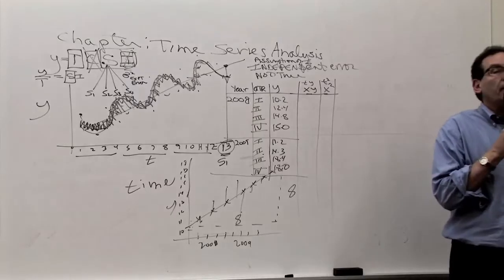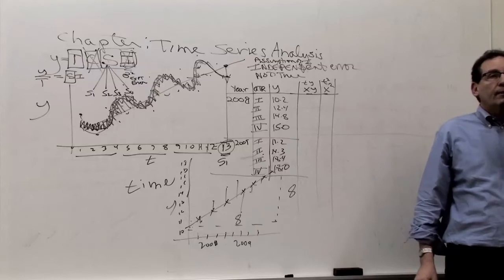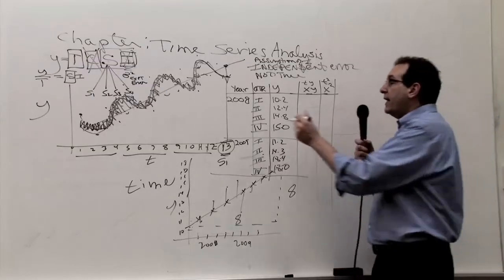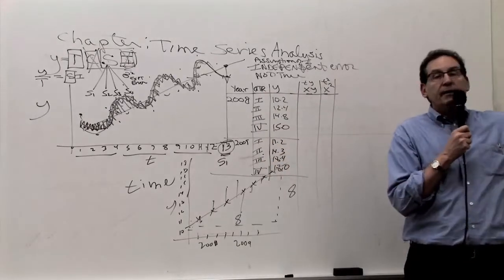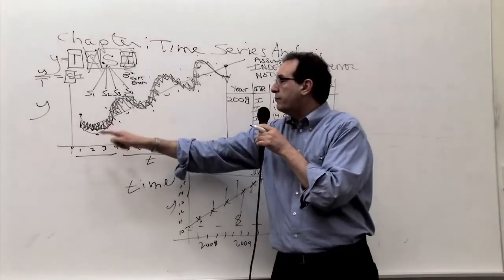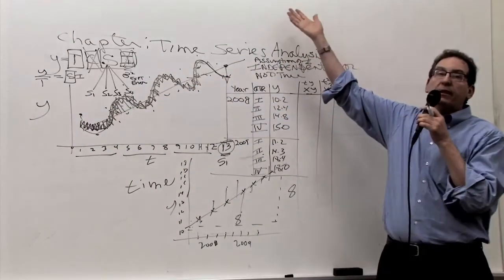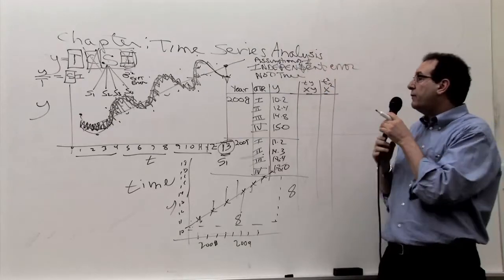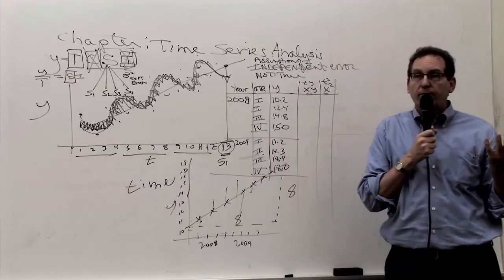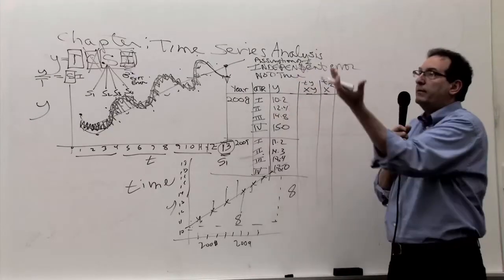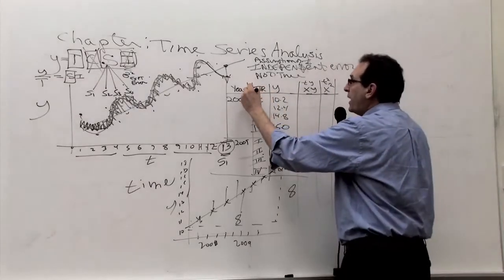What number do you plug in for t? The answer is 1, 2, 3, 4, 5, 6, 7, 8 — that's exactly right. A lot of people think you reset back to 1, 2, 3, 4 each cycle, but that's wrong. As time progresses, the trend of that company's sales is going up or down continuously. So the x is not given to you on the test — you have to realize you need to create another column for t.